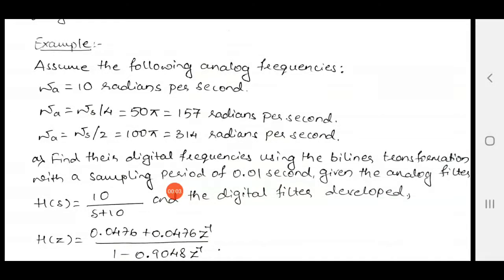Another example based on bilinear transformation. Here in the given example, what they have given? The analog frequencies are given here: W_a is 10 radians, W_a is 50π, W_a is 100π.